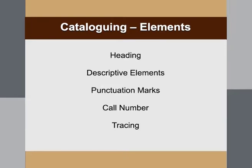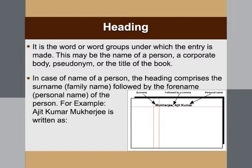The main theme of this session is to discuss the elements of cataloging. When entering records in the card, there are 5 broad elements to keep in mind: heading, descriptive elements, punctuation marks, call number, and tracing. These 5 are the core elements that have to be considered while recording bibliographic details.